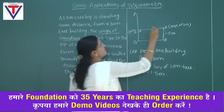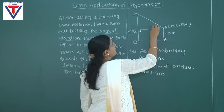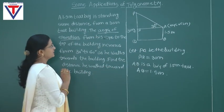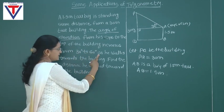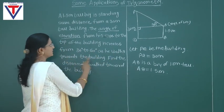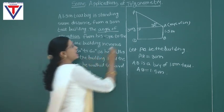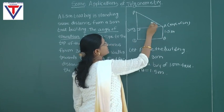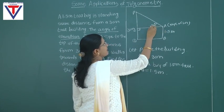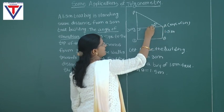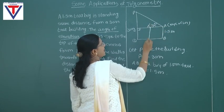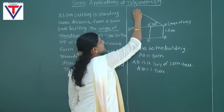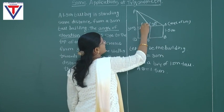He is looking at the building. Before he walks, the angle of elevation is 30 degrees. The angle of elevation increases from 30 degrees to 60 degrees as he walks toward the building. When he was initially far from the building it was 30 degrees, then he walks toward the building. This is the new position of the boy — A is the initial position and we give the new position the name A-dash, B-dash. At the new position, the angle of elevation is 60 degrees.